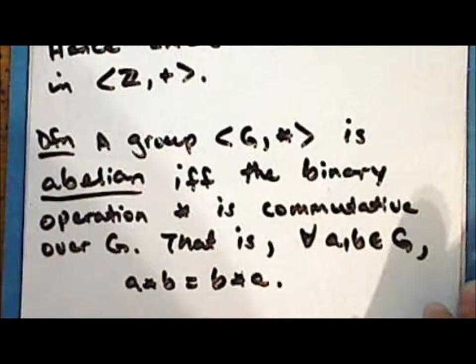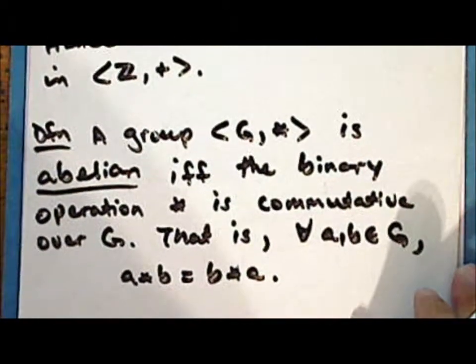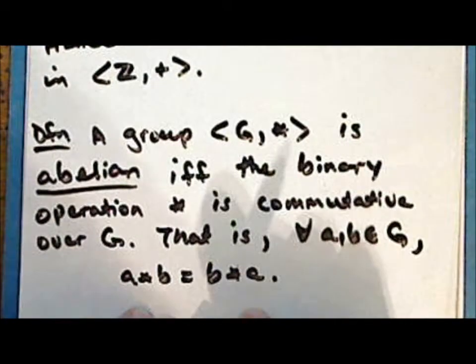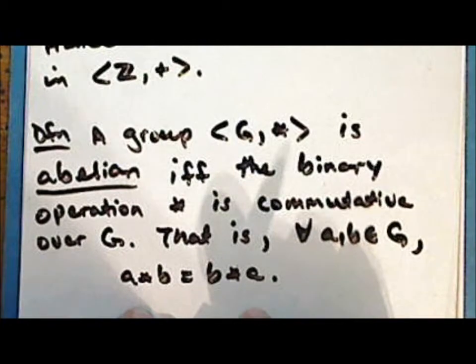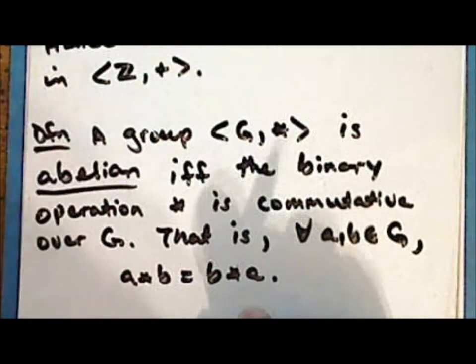Abelian groups are named in honor of the mathematician Niels Henrik Abel. Incidentally, Abel is one of the mathematicians featured in the collage on my main channel page.